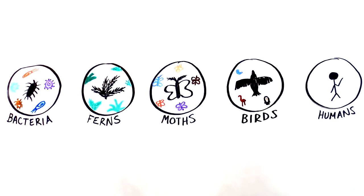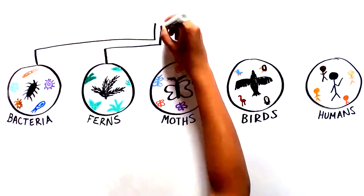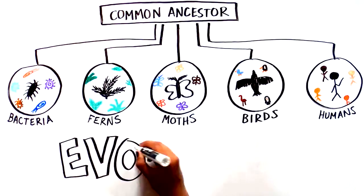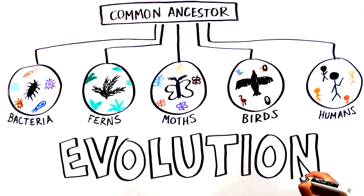Would it surprise you to learn that all these different groups of organisms are thought to have arisen from a single common ancestor? How exactly did this stunning diversity of life stem from one organism? The answer is evolution.